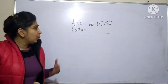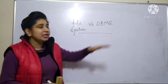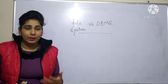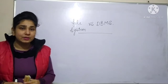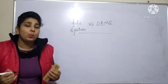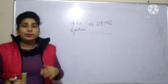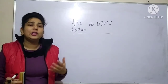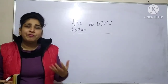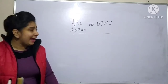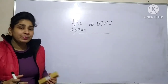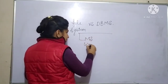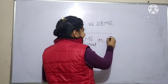Initially, we didn't have the database management system. We were using file system only. What I mean by file system? Our purpose is we want to reduce our manual work and we want to perform all the operations very fast. So when we didn't have the database management system, what we were doing? We were using MS Word or we were using MS Excel.